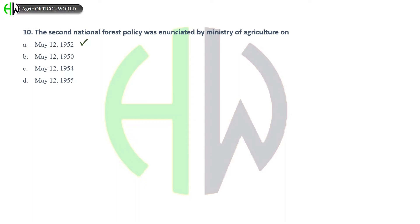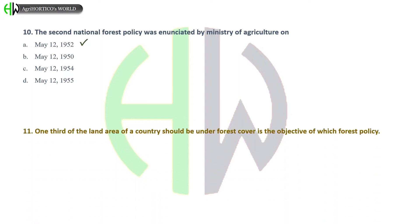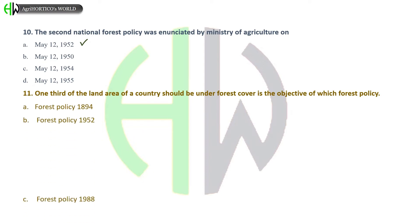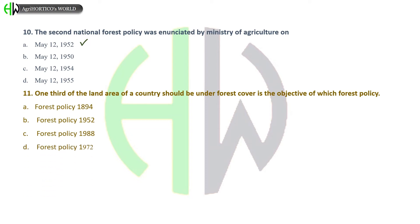One third of the land area of a country should be under forest cover — this is the objective of which forest policy? Options: Forest Policy 1894, 1952, 1988, or 1972. And the correct answer is Forest Policy 1988.